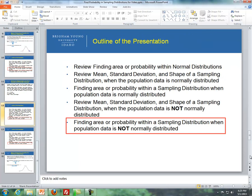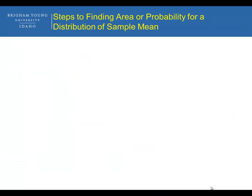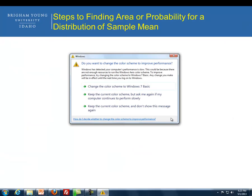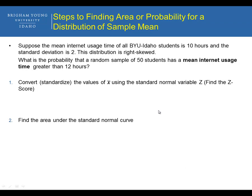Now what I'd like to do is find the area or probability within a sampling distribution when the population data is not normally distributed. This is a similar example to what we've seen before, but now we're going to deal with the original population being right skewed.